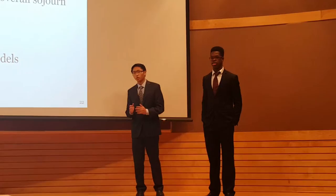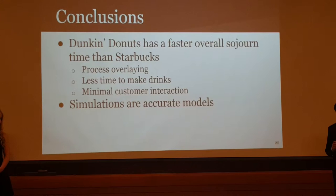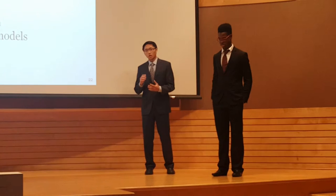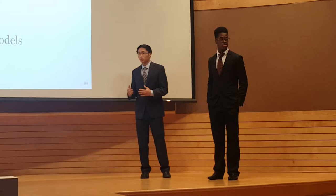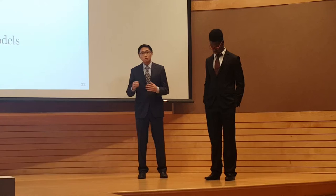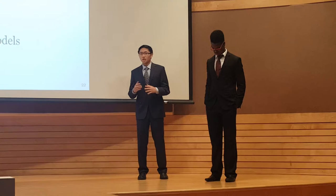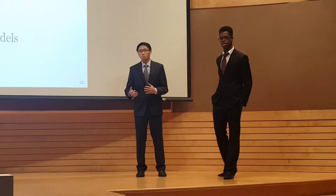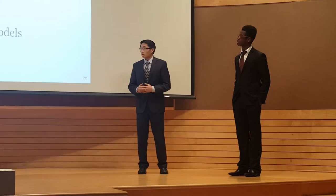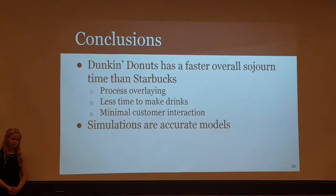Ultimately, our research found that Dunkin' Donuts has a lower overall sojourn time than Starbucks. This conclusion can be attributed to several reasons. From our observations, we know that cashiers at Dunkin' participate in a type of parallel process. Furthermore, Dunkin' Donuts takes less time to make drinks because their production machines are optimized toward their product model. Dunkin' Donuts also has shorter customer interaction as opposed to Starbucks, which offers more customer loyalty and brand value. With that conclusion, we know that these firms' operations actually reflect their respective business models.